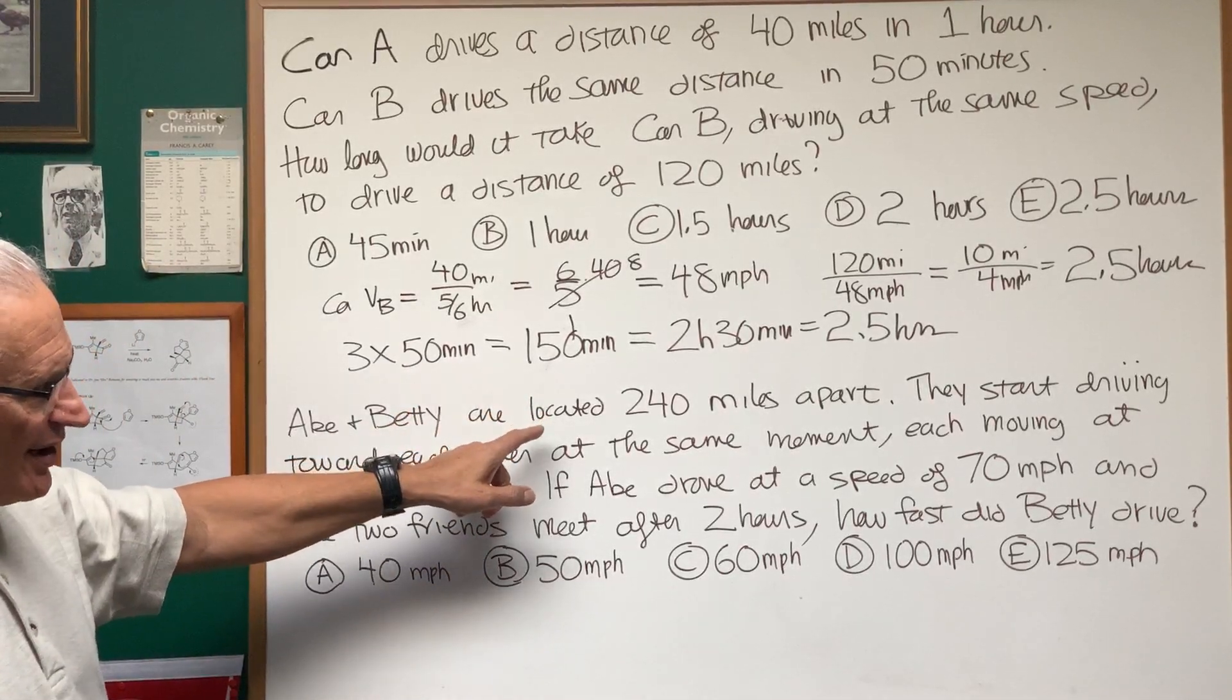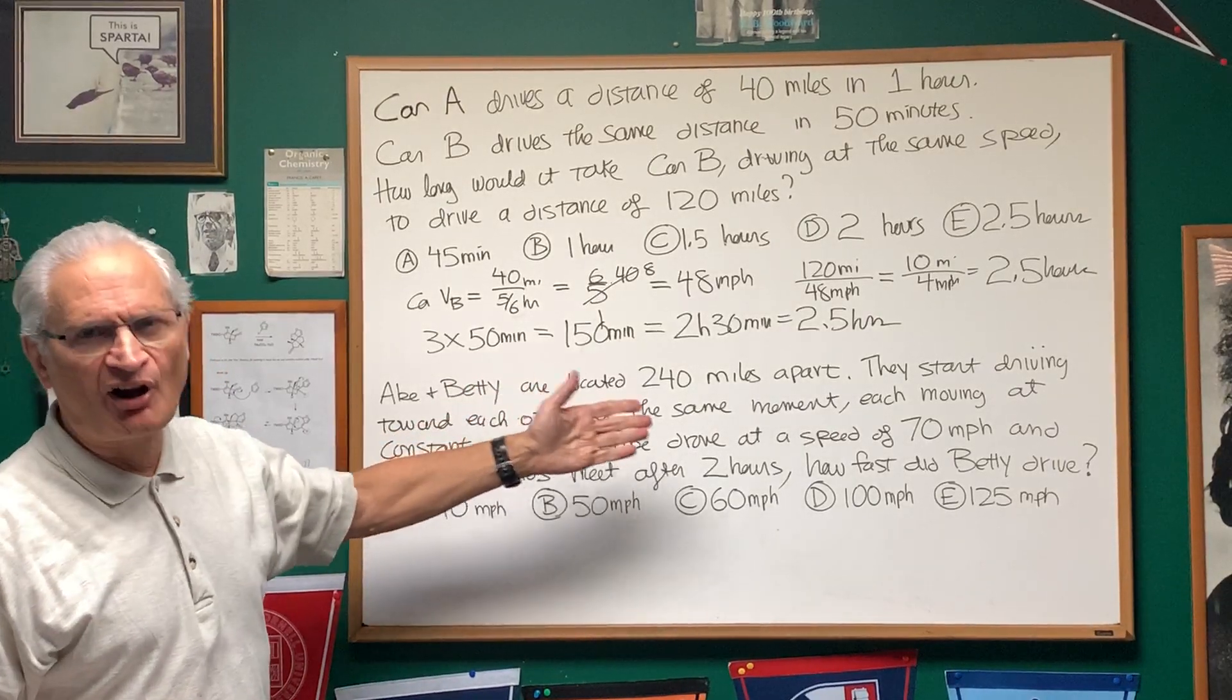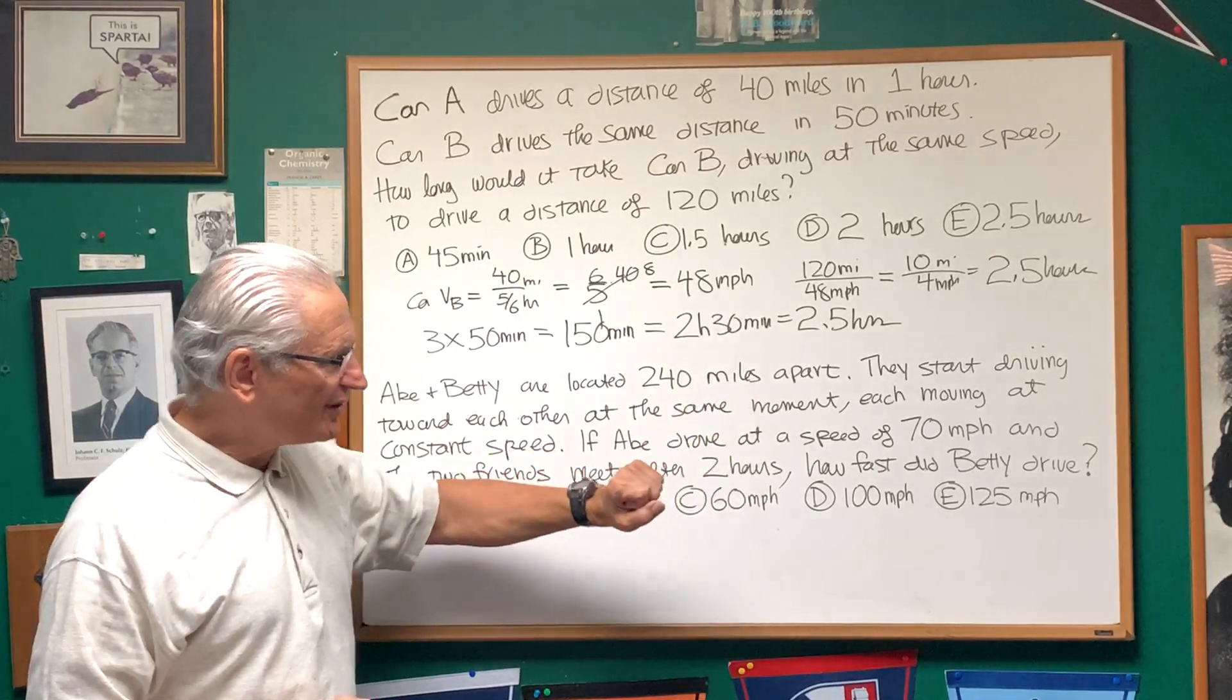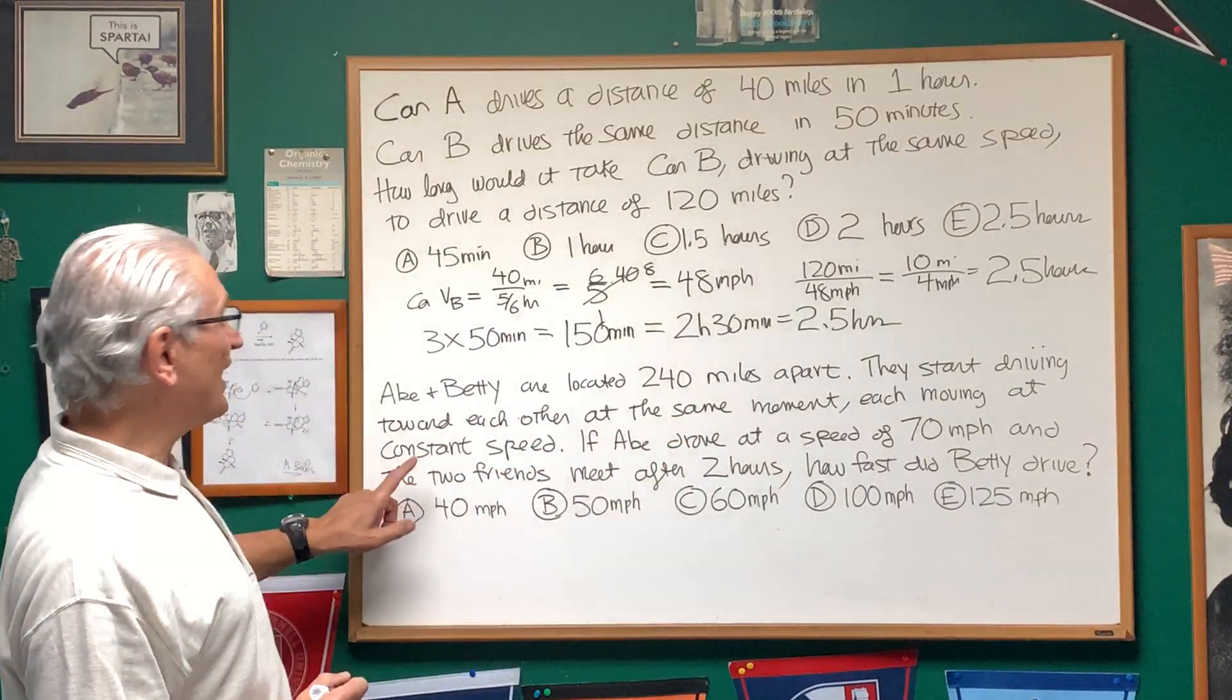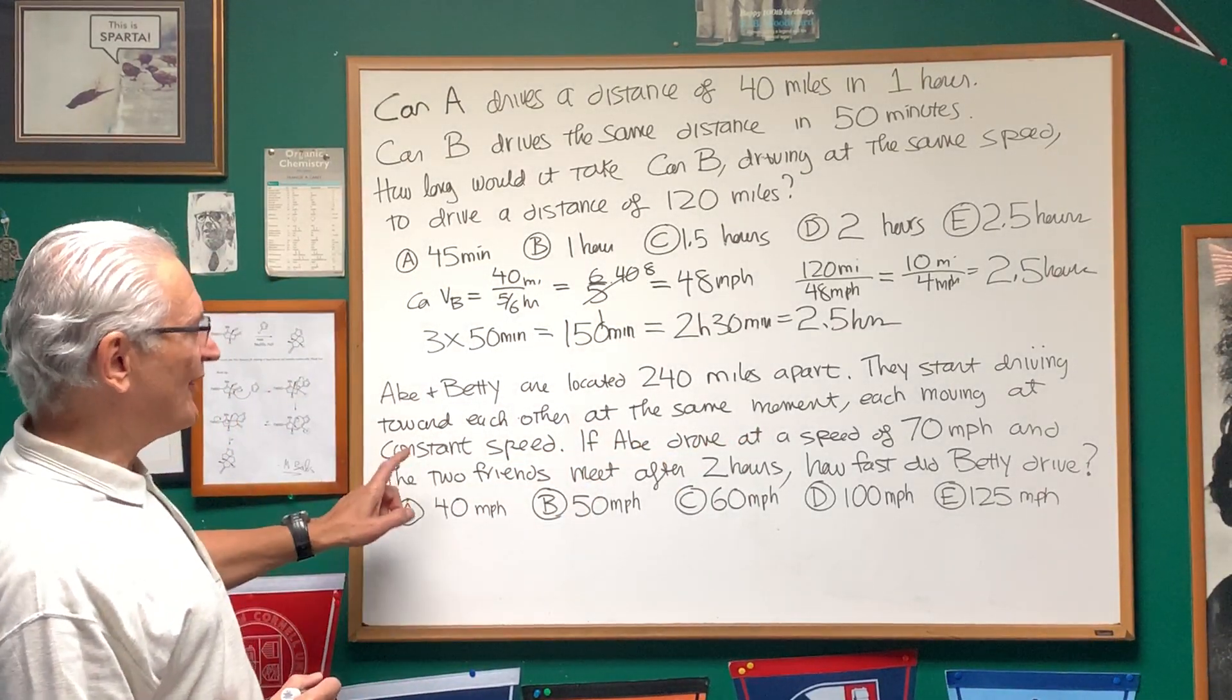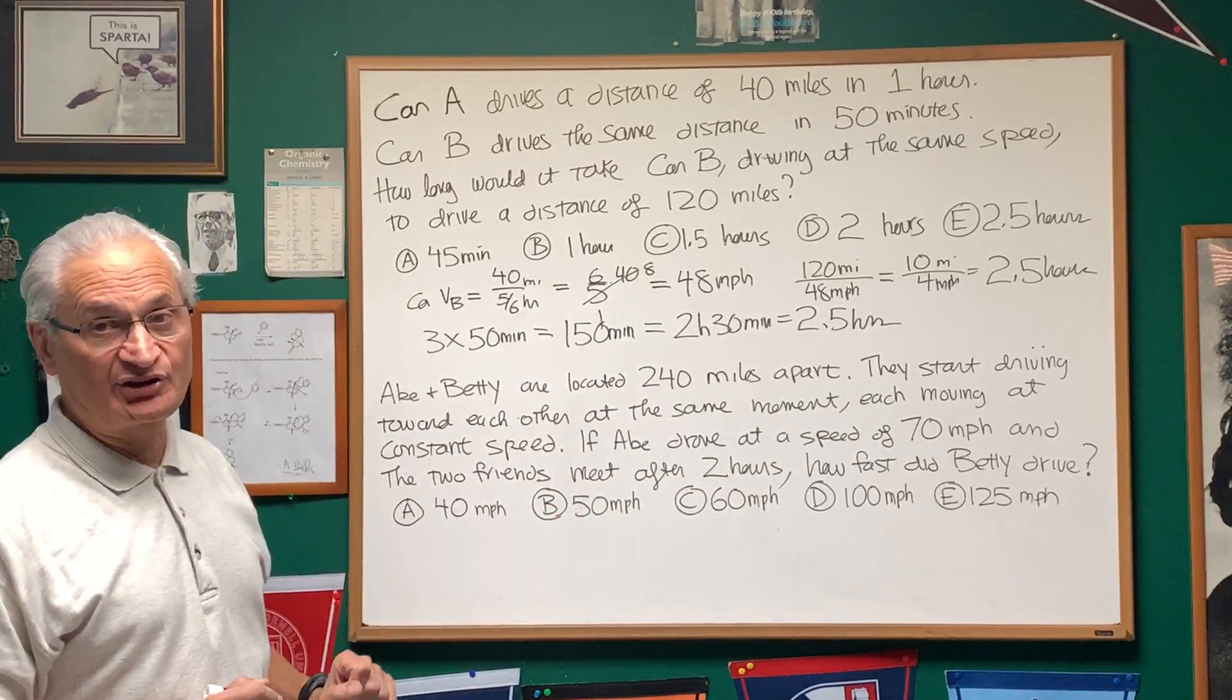Okay, let's look at the second problem, and this is also a problem that looks harder than it is. Abe and Betty are located 240 miles apart. They start driving toward each other at the same moment, each moving at constant speed. If Abe drove at a speed of 70 miles an hour, and the two friends meet after 2 hours, how fast did Betty drive?